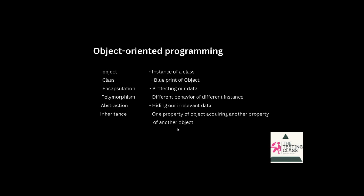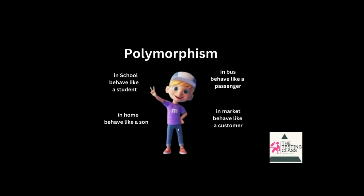What is object? Instance of a class. What is class? Blueprint of the object. Encapsulation: protecting our data. Polymorphism: different behavior of different instances. Abstraction: hiding our irrelevant data. Inheritance: one object acquiring the properties of another object. So let's start with a brief introduction of each concept.